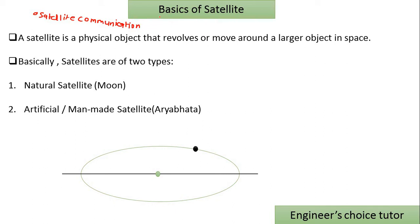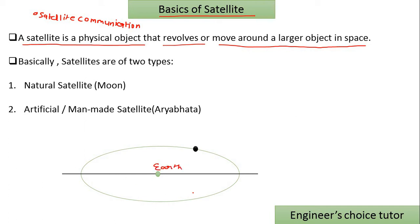Today we will study the basics of satellite. In simple words, a satellite is a physical object which moves around a larger object. A satellite is a physical object that revolves and moves around a larger object in space. For example, consider our Earth — the moon moves around it. The moon is Earth's natural satellite; it moves in a fixed orbit.